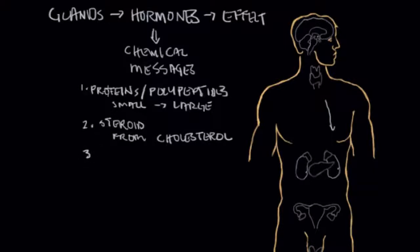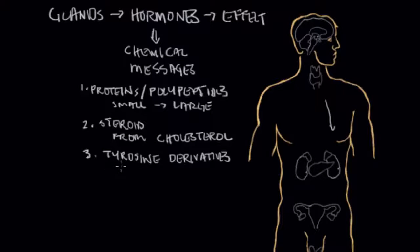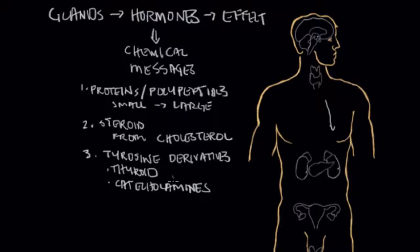Then there's a class called tyrosine derivatives. Tyrosine is an amino acid, and this class of hormones is separate because they're derived from tyrosine. The two main classes of tyrosine derivatives are thyroid hormones and catecholamines. Catecholamines are the hormones made in the adrenal medulla, and they include epinephrine and norepinephrine. A more common name outside the medical community for epinephrine is adrenaline, which we hear about in the fight-or-flight response.